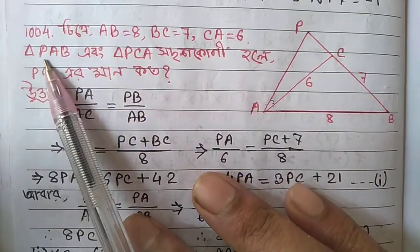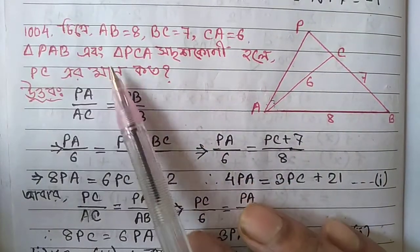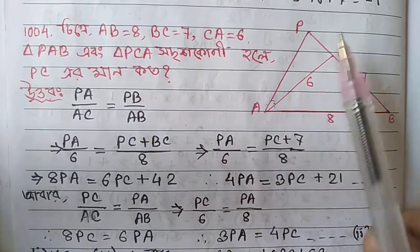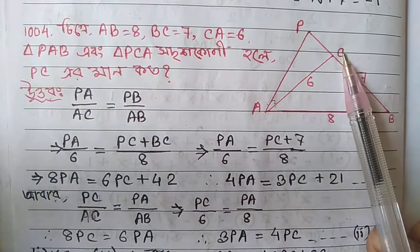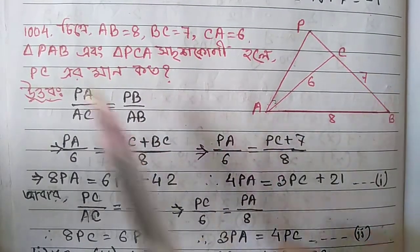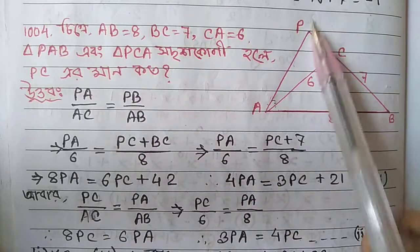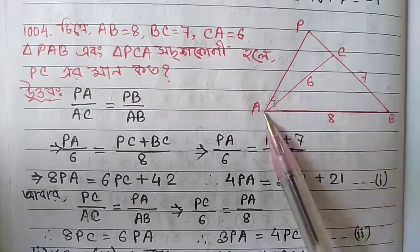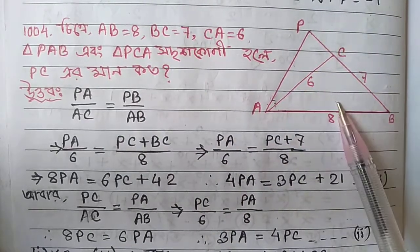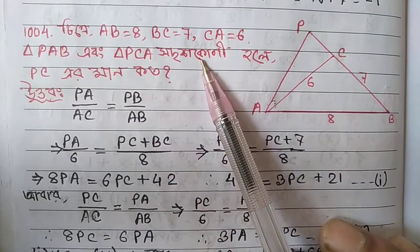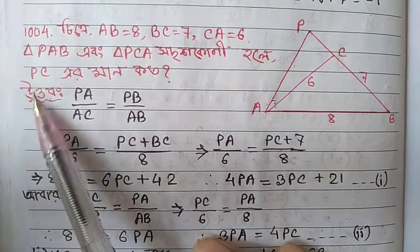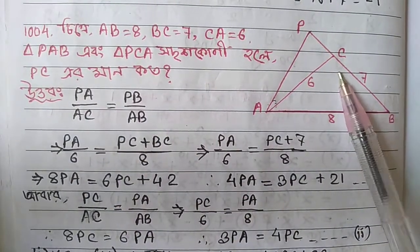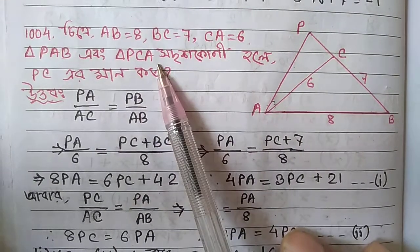If triangles PAB and PCA are similar, then PAB and PCA being similar means that the corresponding ratios of the similar triangles hold.